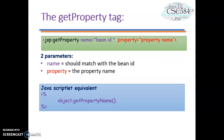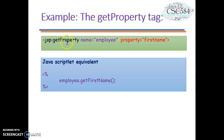Let's move on to the getProperty tag. The syntax is: jsp:getProperty name="beanId" property="propertyName". It has two parameters: name, which should match the bean ID, and property, which is the property name. The JavaScript equivalent is calling object.getPropertyName() as a method. In the example for EmployeeBean, name is set equal to the bean ID 'employee' and property is set to 'firstName', which is a data member in EmployeeBean. The JavaScript equivalent calls getFirstName() on the object.